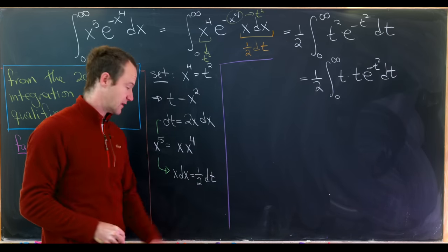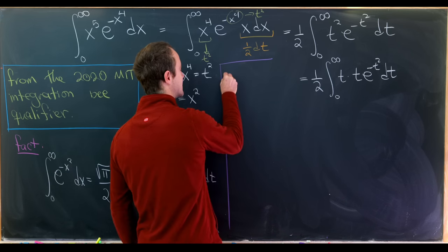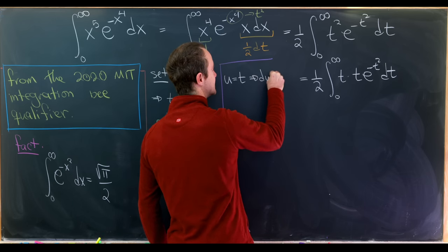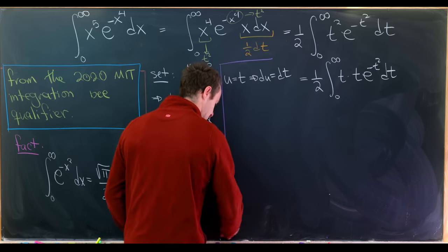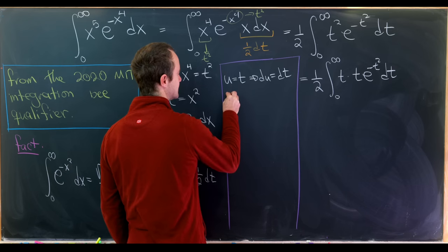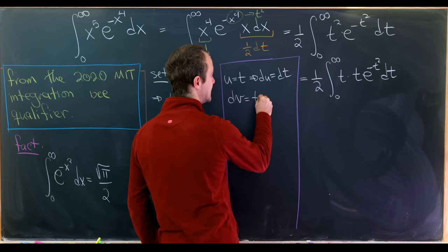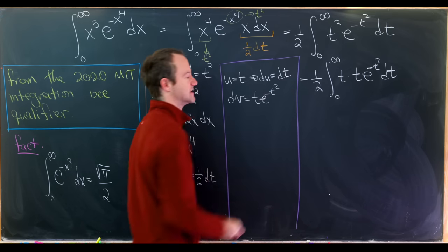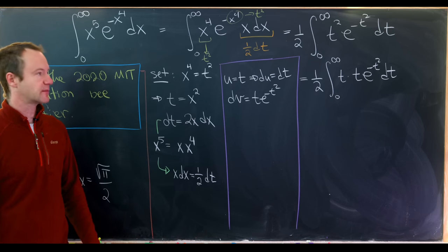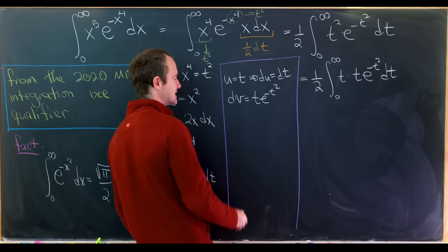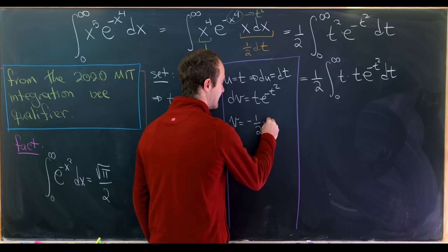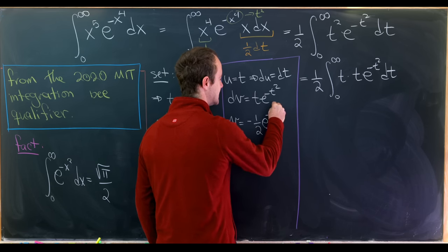Then, like I said, we'll use integration by parts. So let's take u and set it equal to t. So that tells us that du is equal to dt. And then next, we'll let dv gobble up everything else. So dv will be equal to t e to the minus t squared. So it's a little bit more complicated of a choice for our differential part, but it works in this case. So now we can easily take the antiderivative of this and we'll get minus one half e to the minus t squared.